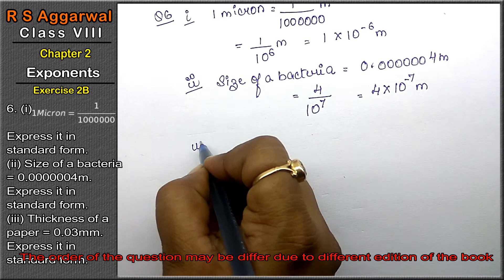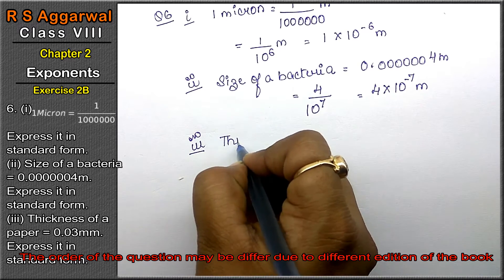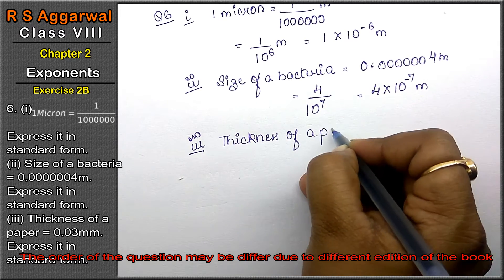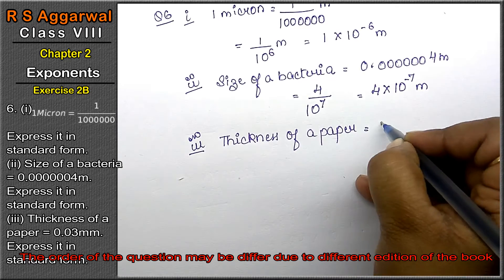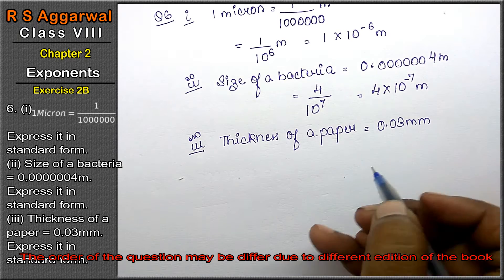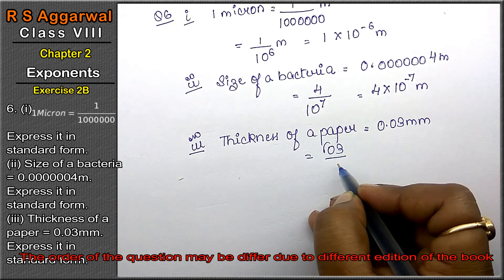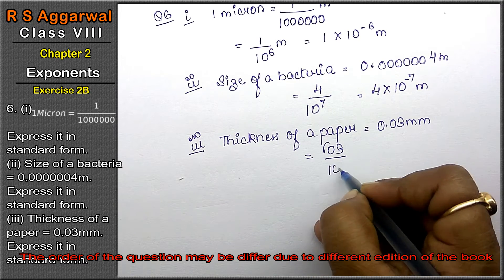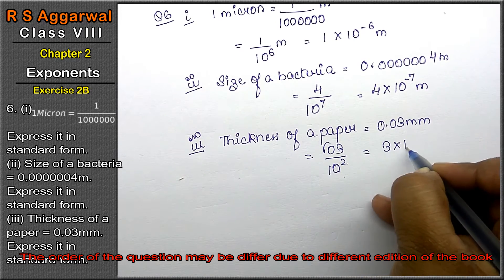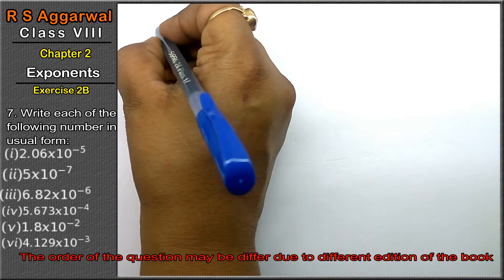Let's do the third part. Thickness of a paper equals 0.03 millimeters. Express it in standard form. We move the decimal point, so we write 3 upon 10 to the power 2, which means 3 × 10⁻² mm. That is the answer.